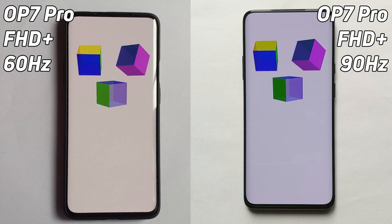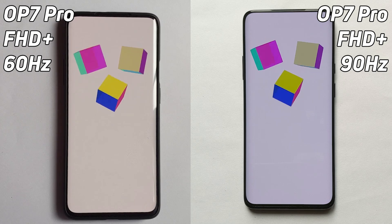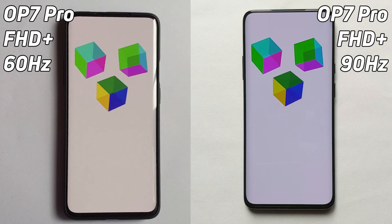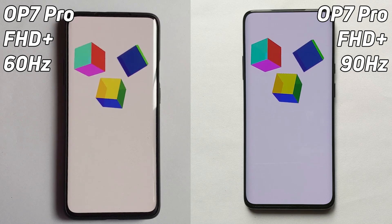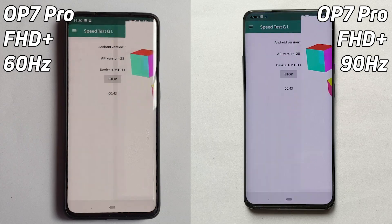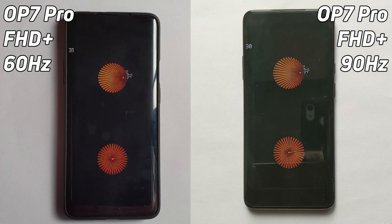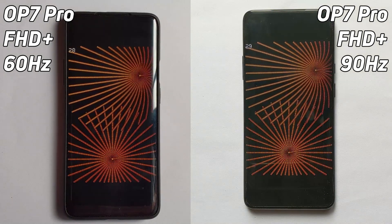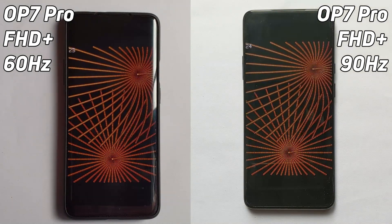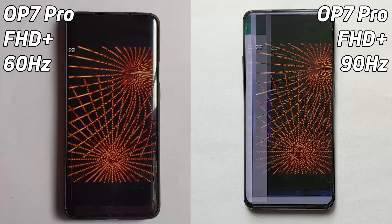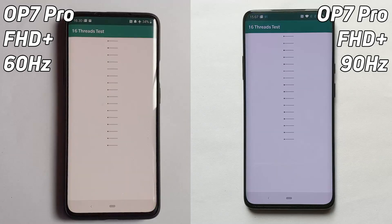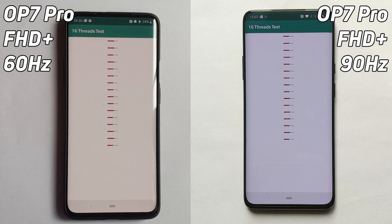Refresh rate is about how fast electronically the display is updated, whereas frame rate is how quickly the CPU and the GPU can generate the frames. And if there's not a frame available, the refresh rate will just mean it puts the same frame up there again, as we go now into the 16th rate test.